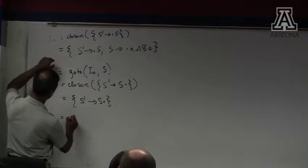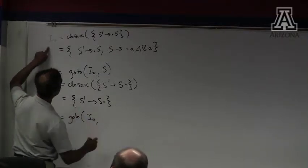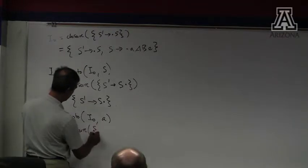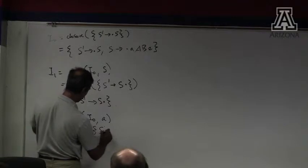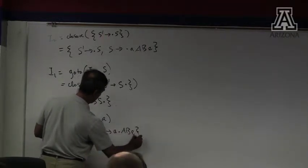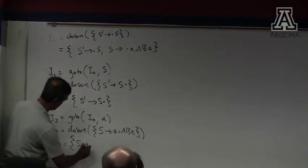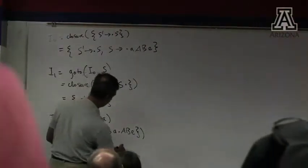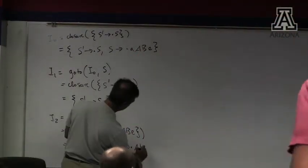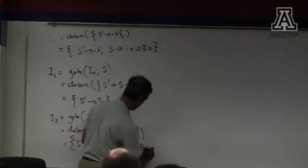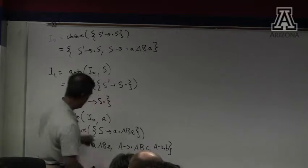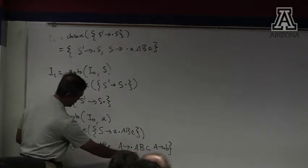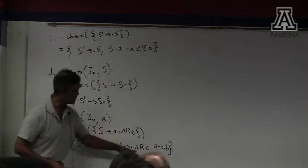I2 is go-to from I0 on little a, that's equal to the closure of dot A, A, B, E. And there's a non-terminal here. So A goes to dot A, B, C, and A goes to dot B. And in fact, there's a non-terminal to the right of the dot, so I should throw in the items corresponding to the productions for A, but they are already in here — they don't change anything.